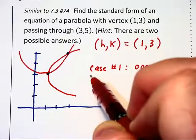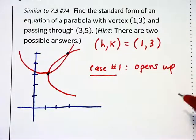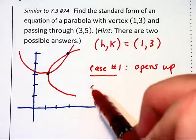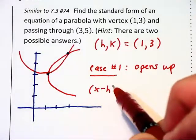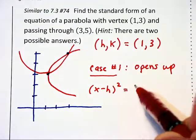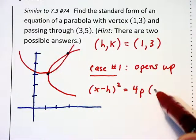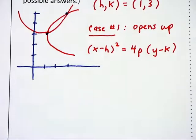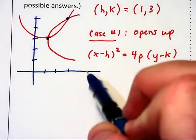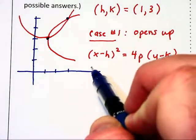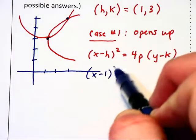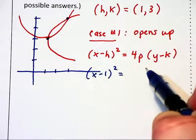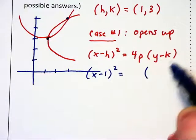Now, in that case, it is not a function, and therefore, x is squared, and we have x minus h squared equals 4p times y minus k. And we can begin by substituting in the values for h and k, and write x minus 1 squared equals 4p times y minus 3.